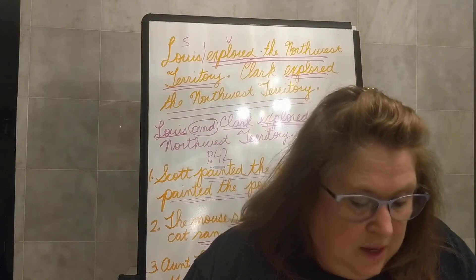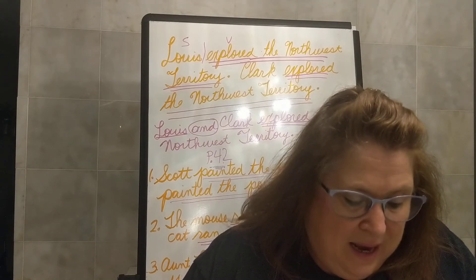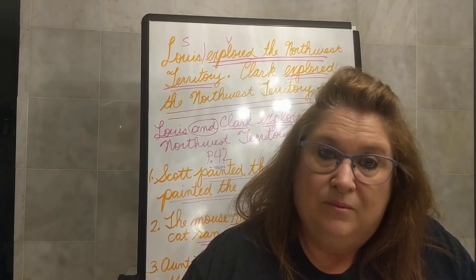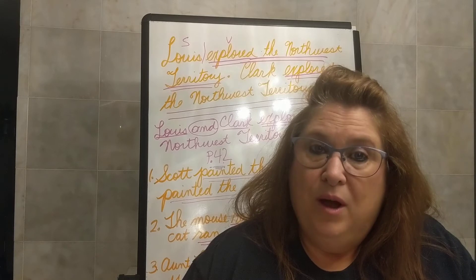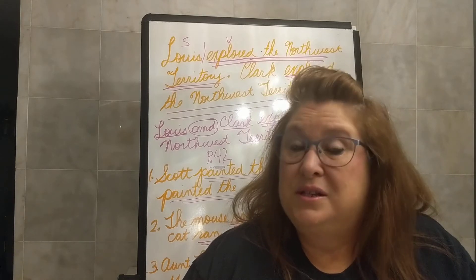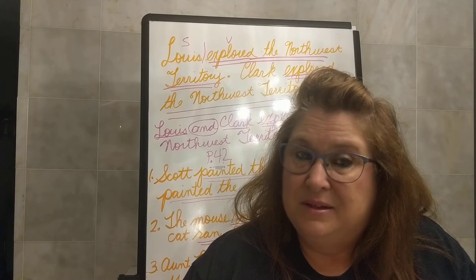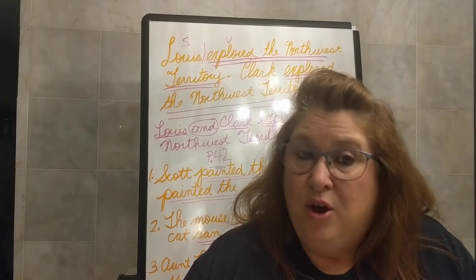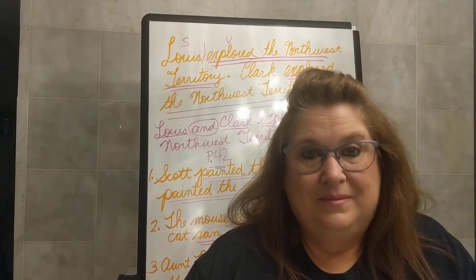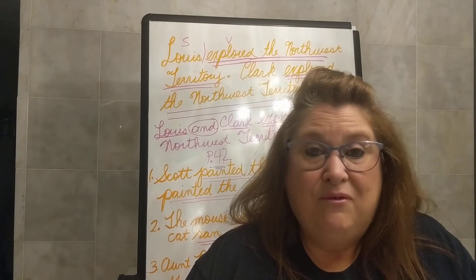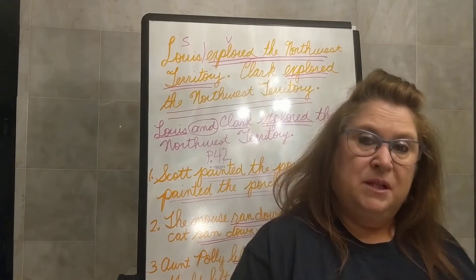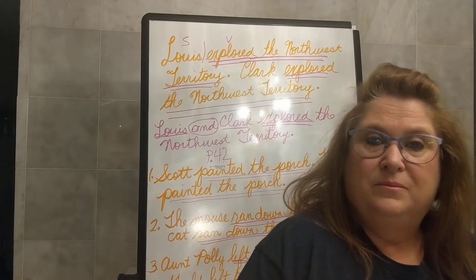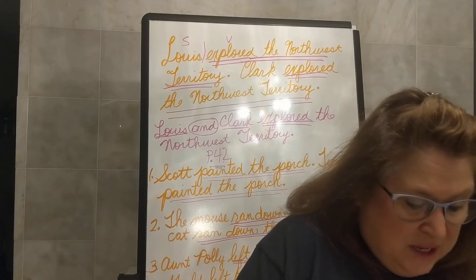Let's read our sentence again: The farmer and the airplane pilot are especially concerned with the weather. So what is our verb? Are concerned is our verb — underline it twice. Who or what are concerned? Farmer and pilot, not farmer and airplane — farmer and pilot. So what kind of subject do we have? We have a compound subject.